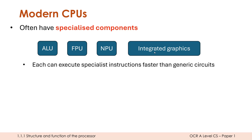We'll talk about graphics cards in a few videos' time, but ironically the cheaper CPUs tend to have integrated graphics to support graphic-related tasks. More expensive CPUs don't have this because they expect you to buy a fancier and more powerful graphics card.